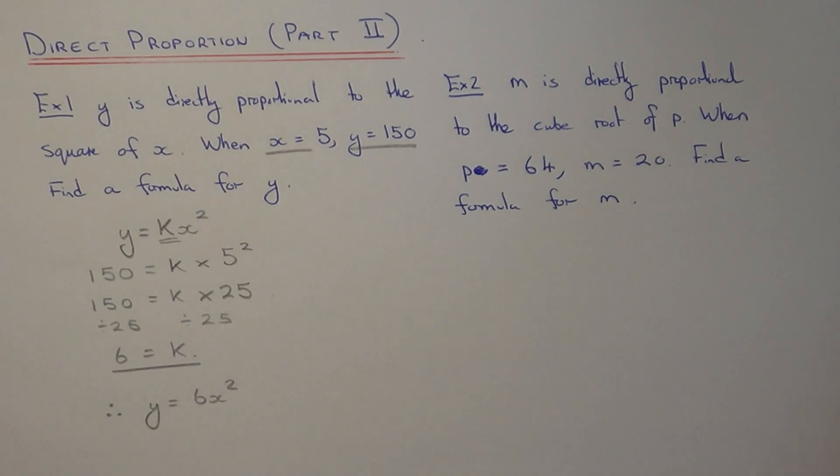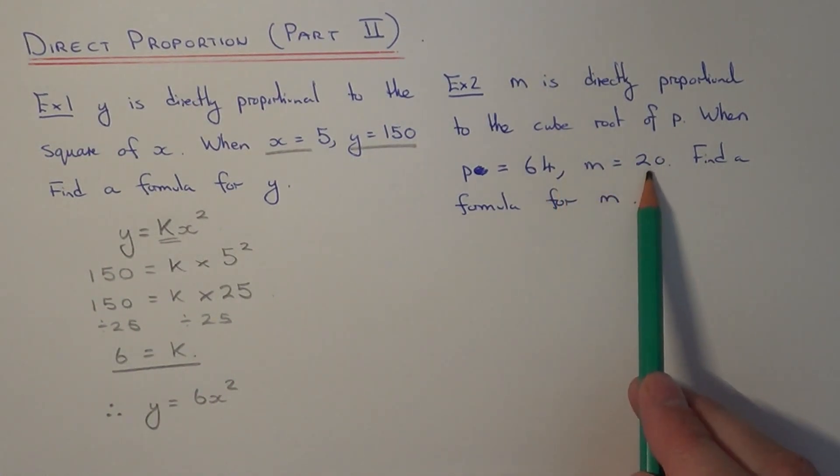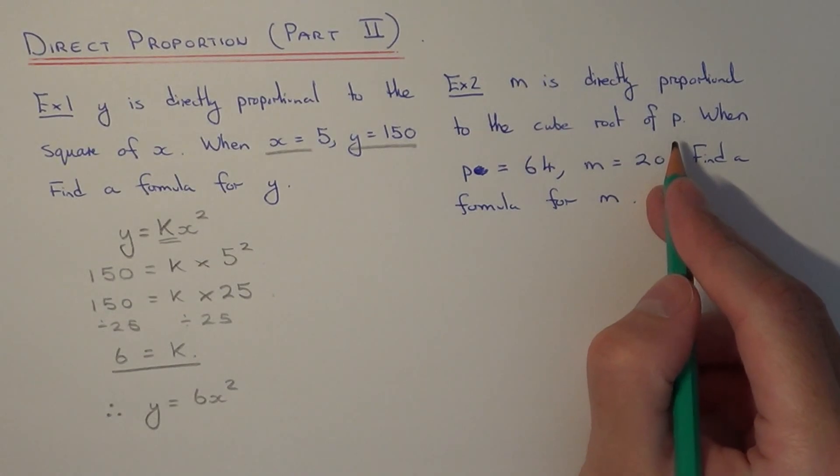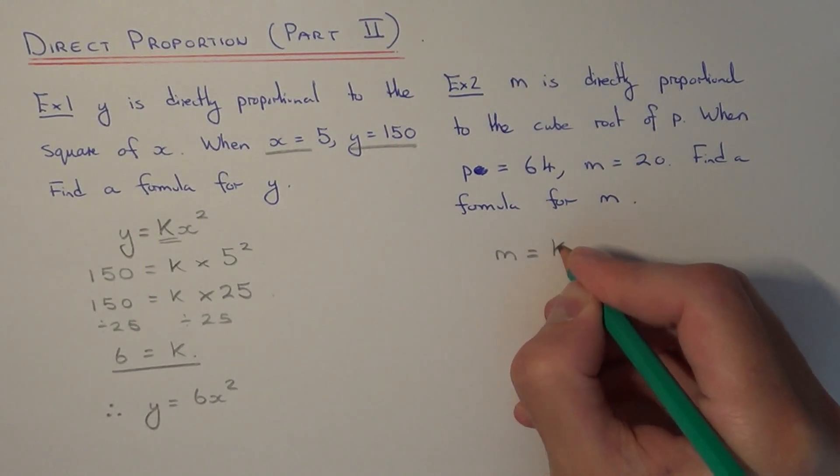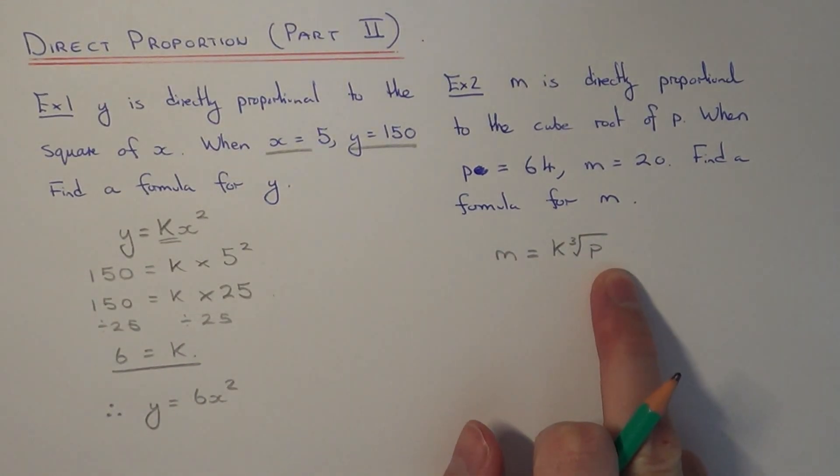Let's move on to example 2. This time m is directly proportional to the cube root of p. When p equals 64, m is equal to 20, find a formula for m. Since m is directly proportional to the cube root of p, this means my formula will take the shape m equals k multiplied by the cube root of p.